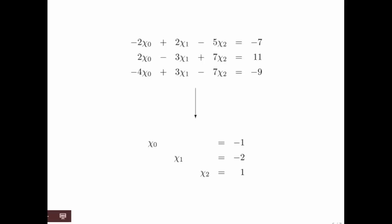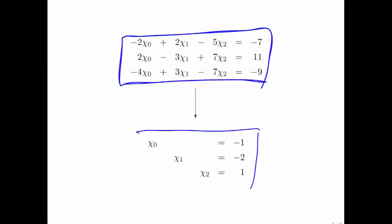So what we have just done is we've taken the original system, and through a sequence of steps, we have changed it into a system that you can recognize as the identity times chi zero, chi one, chi two equal to the right-hand side minus one, minus two, and one.